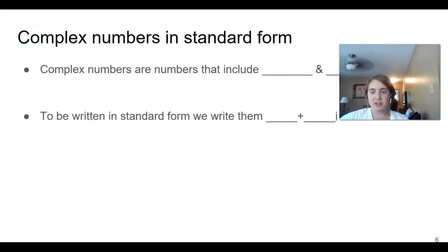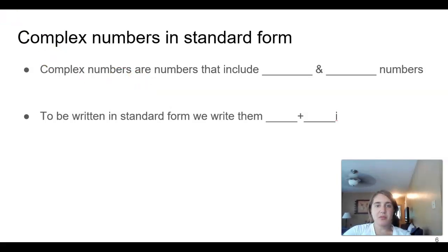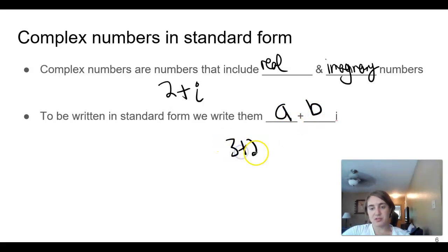So, the next thing we need to talk about is complex numbers. Complex numbers are numbers that include real and imaginary numbers. For example, like 2 plus i. This is real, that's imaginary. To write them in standard form we write them a plus bi. So, we'd have like 3 plus 2i. If we did it this way, this is not standard form. Or if there's a subtraction that's fine.